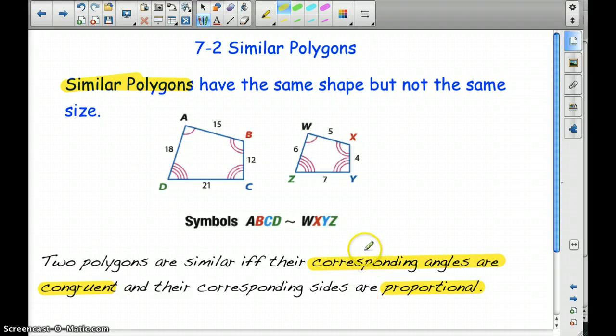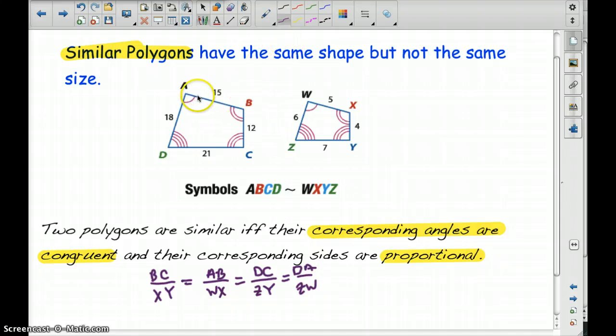Go ahead and write down this example and I'll show you how we can tell if these are similar polygons. So notice that A is congruent to W, B is congruent to X, Y is congruent to C, and Z is congruent to D.